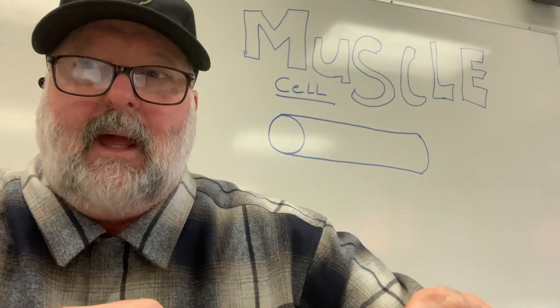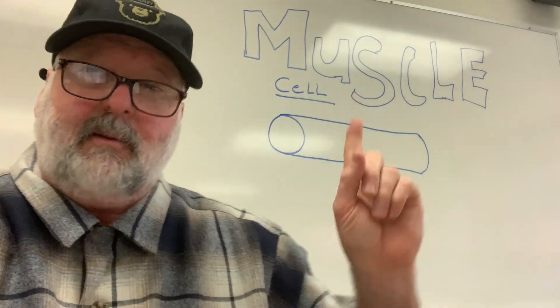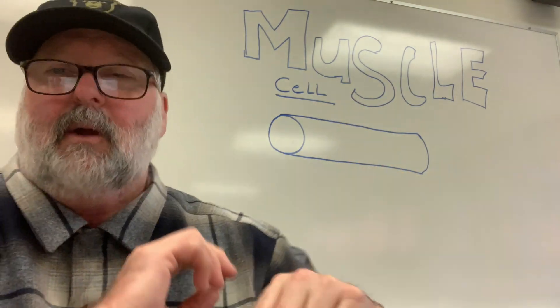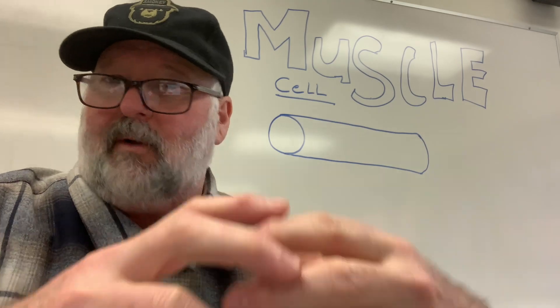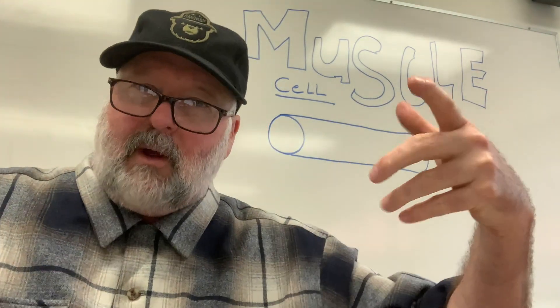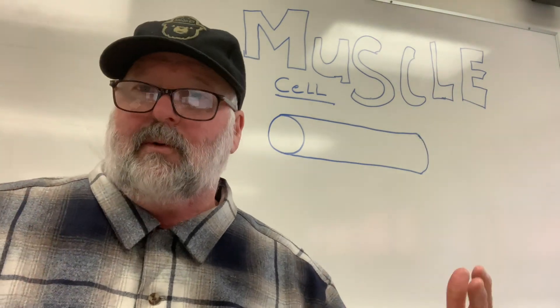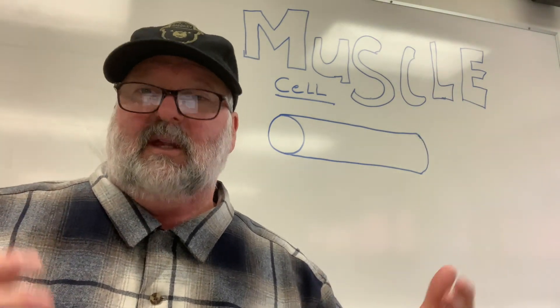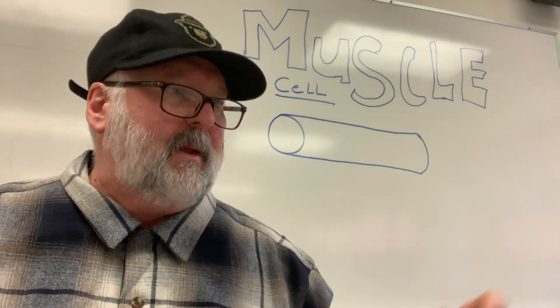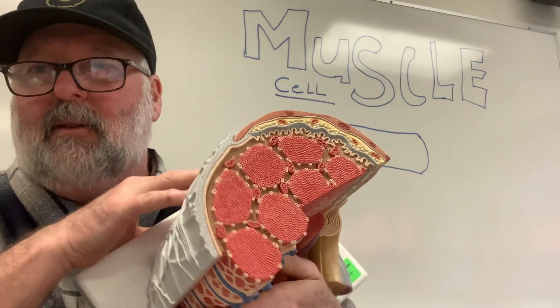In this video we're going to have a look at skeletal muscle cells. Up here on the board I've drawn a real basic design. These cells are really elongated — roundish but a long cylinder — and there are of course a number of them in a given muscle. Let's move to the model and have a look.